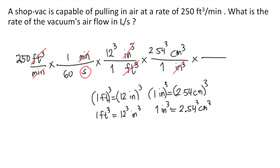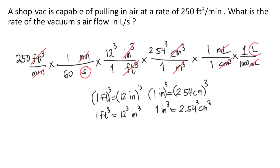We can convert cubic centimeters to mL. We know that 1 cubic centimeter is equivalent to 1 mL, so the cubic centimeters cancel and now we have mL. Finally, we convert mL into liters. We know that 1 liter has 1,000 mL, so the mL cancel. Now we have liters on top and seconds in the denominator — our desired units.